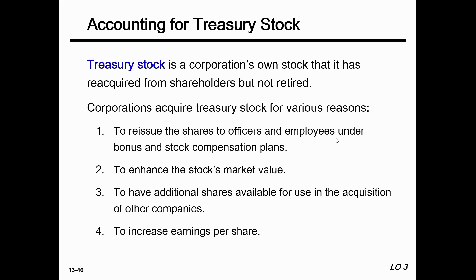The third reason: when companies are involved in acquiring another company, they can offer their treasury shares instead of cash to complete the acquisition. The fourth reason is to increase earnings per share (EPS). EPS equals net income divided by total outstanding shares. If outstanding shares in the market decrease, the denominator becomes smaller, and since net income stays the same, EPS will increase.